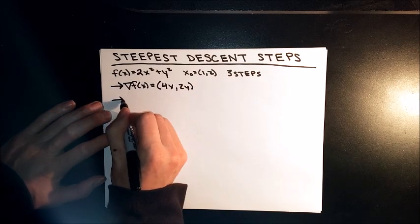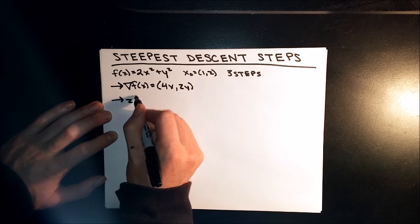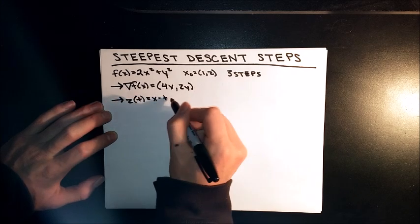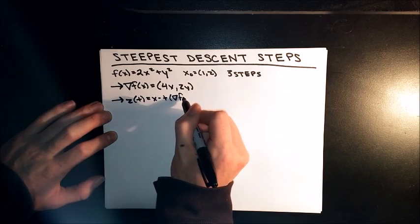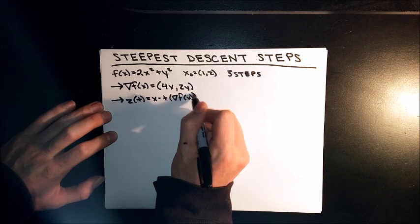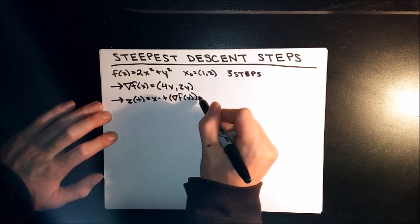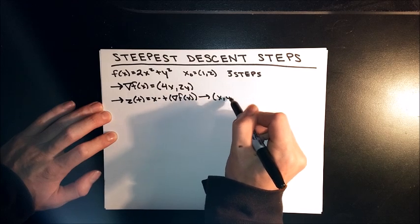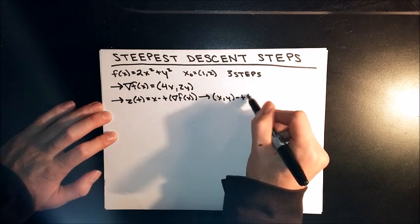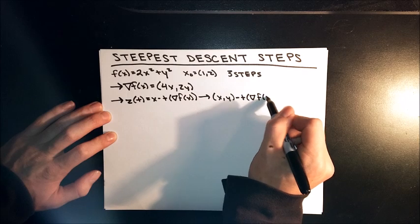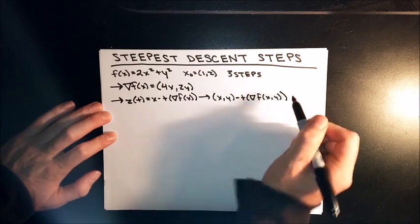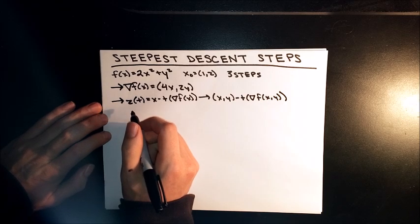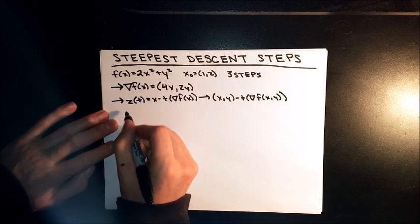Our next step is finding z of t. The formula is x minus t gradient f of x. Or you can expand this out and say it's x, y minus t gradient f of x, y. That's a better way of thinking about it. You're just going to be plugging values in, which I will show here.